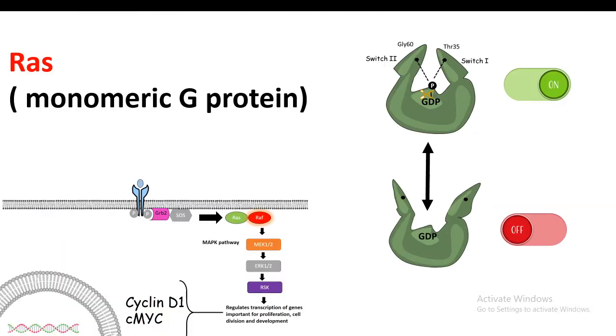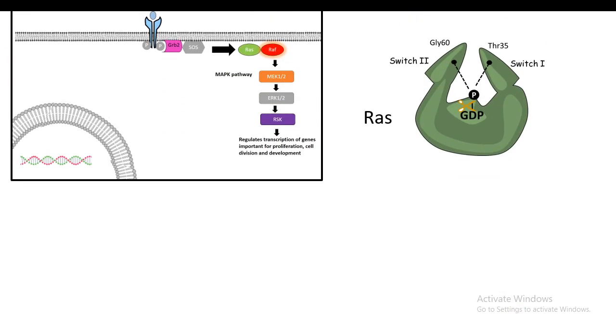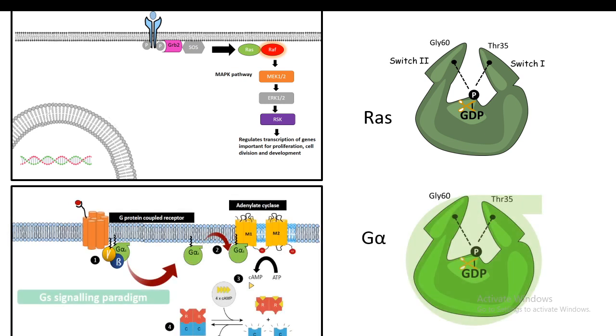Hi, in this video we're going to talk about Ras, which is a monomeric G protein. When we talk about G proteins, the picture that comes to mind is G protein-coupled receptor signaling with trimeric G proteins, which have a G alpha, beta, and gamma subunit. But other than this trimeric format of G protein, there are quite a lot of G proteins which are monomeric, such as Ras.